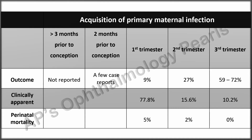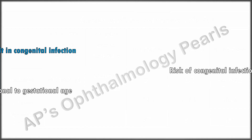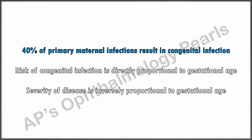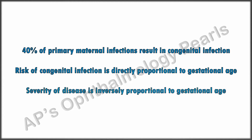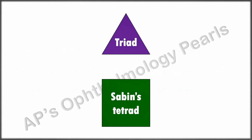Fetal infection does not occur during maternal reactivation due to immune protection; however, infection with a different strain might cause fetal infection. Overall, 40 percent of primary maternal infections result in congenital infection. The risk of congenital infection is directly proportional to gestational age, while the severity of disease is inversely proportional to it.